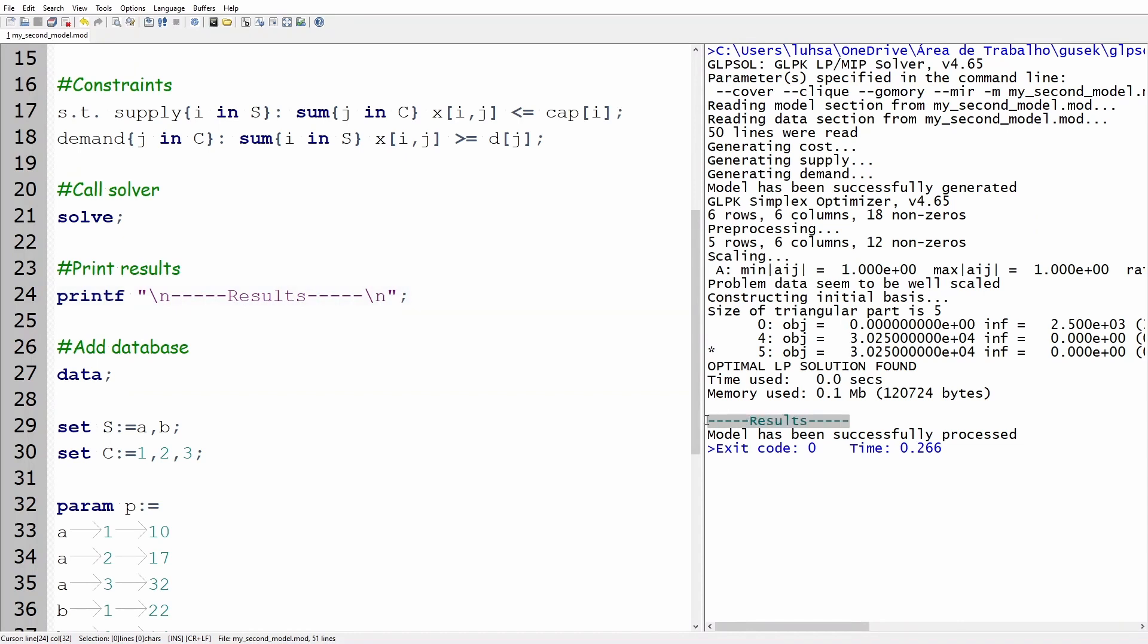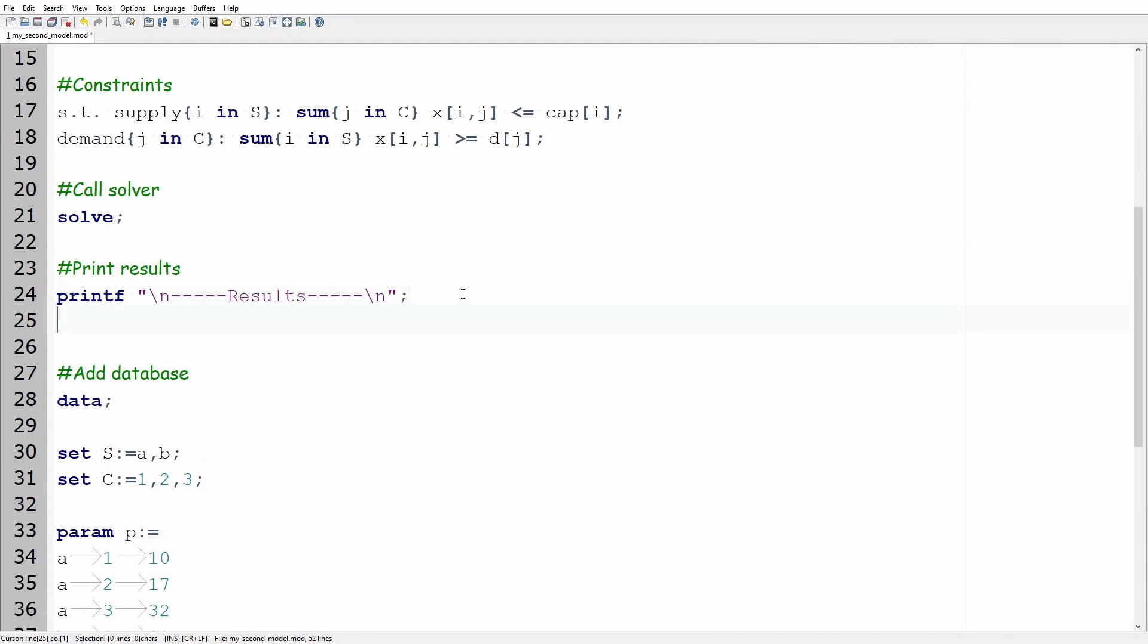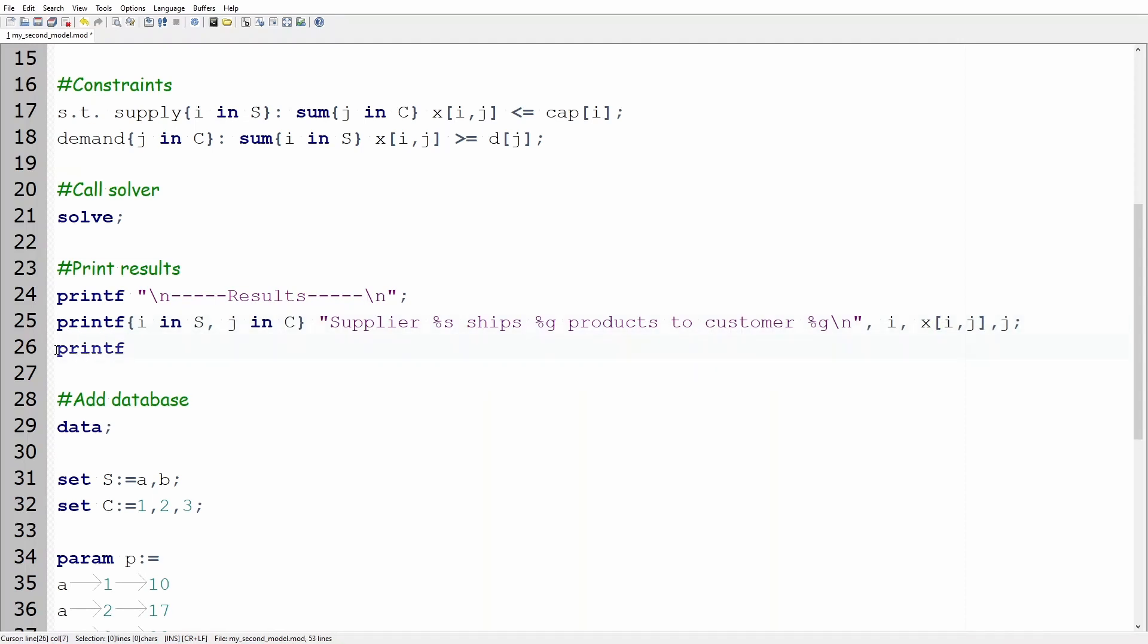In this new version the results are in a bluish color. This is helpful to identify the results location within all the text in the terminal. On the next line write printf keys i in s comma j in c quotation mark supplier percentage s ships percentage g products to customer percentage g backslash n quotation mark comma i x brackets i j j semicolon. Observe that the order of the outputs after the comma is the same as the one in the percentage. Let's add the total cost statement as we constructed in the previous section and run the code.